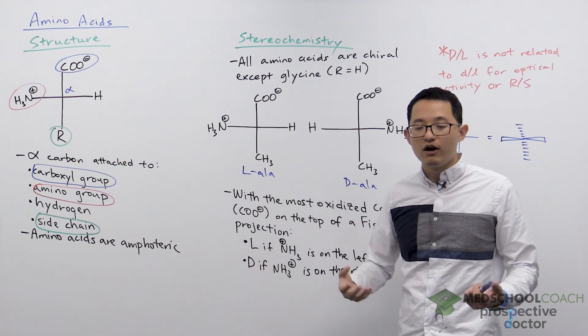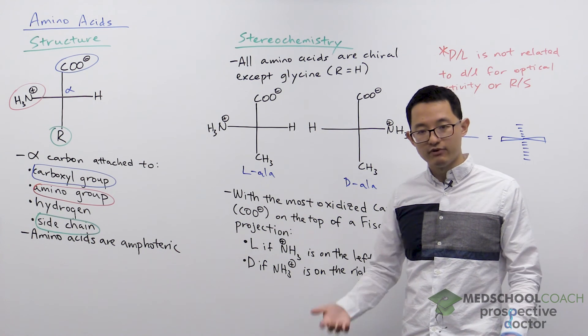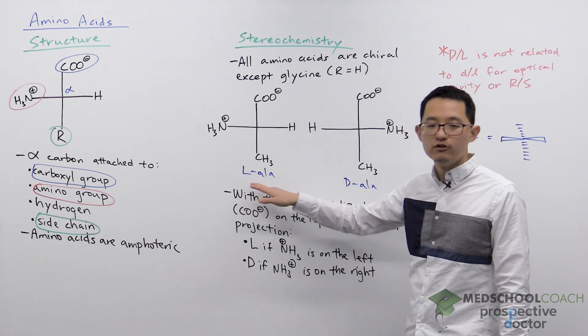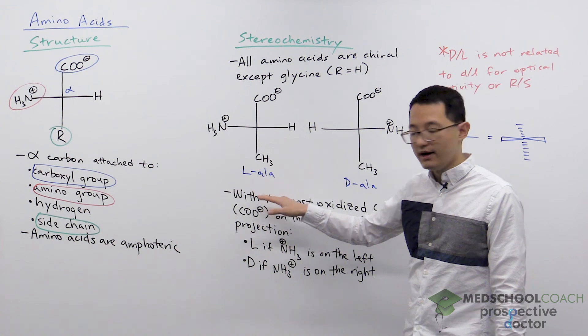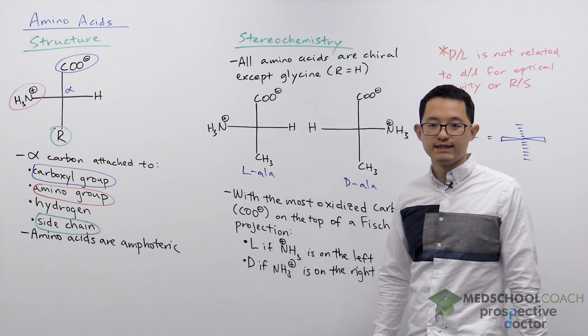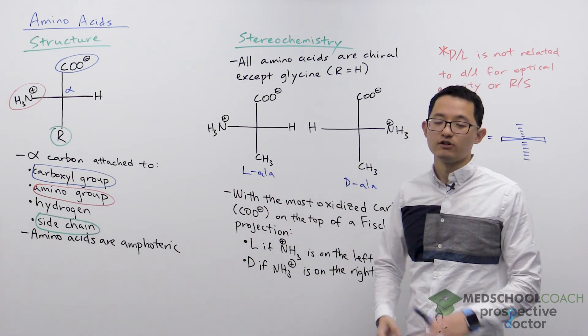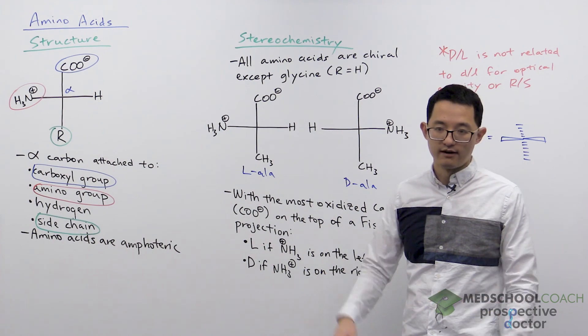However, that's not always the case. For example, for cysteine the L version of cysteine is R and the D version of cysteine is S. So no trends there at all.